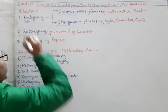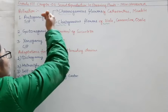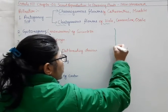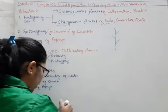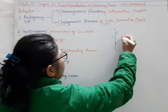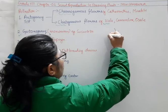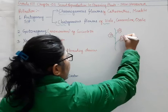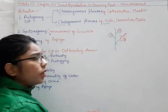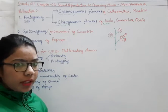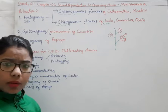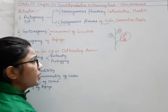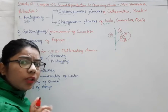Now, what is the difference between autogamy and geitonogamy? In autogamy, the flower is the same and both reproductive units — male as well as female — are present on the same flower. It is known as autogamy. In geitonogamy, the plant is the same, but it will bear two different types of flowers.